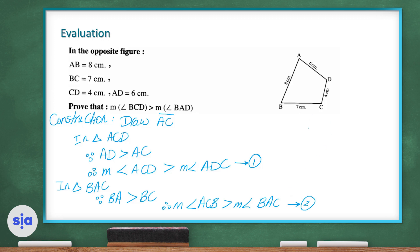If we add inequalities 1 and 2 together, we get that the measure of angle BCD is greater than the measure of angle BAD. And now dear students, we have come to the end of our session. Thank you very much and wishing you the best of luck.